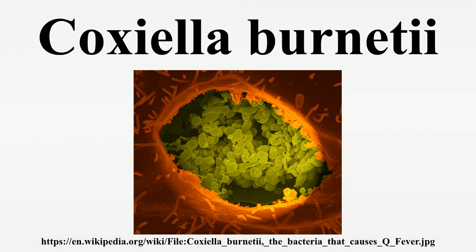The bacteria use a type IVB secretion system known as ICM to inject effector proteins called ANK proteins into the host. These effectors increase the bacteria's ability to survive inside the host cell, similar to Legionella pneumophila, which uses the same secretion system and also injects ANK proteins. Survival is enhanced because these ANK proteins interfere with fusion of the bacteria-containing vacuole with the host's degradation endosomes.